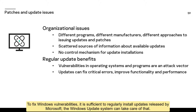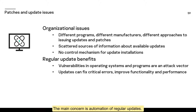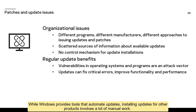To fix Windows vulnerabilities, it is sufficient to regularly install updates released by Microsoft. The Windows Update system can take care of that. To fix vulnerabilities in other software products, it is usually necessary to install a new version of the application or a patch released by the manufacturer. The main concern is automation of regular updates. While Windows provides tools that automate updates, installing updates for other products involves a lot of manual work.